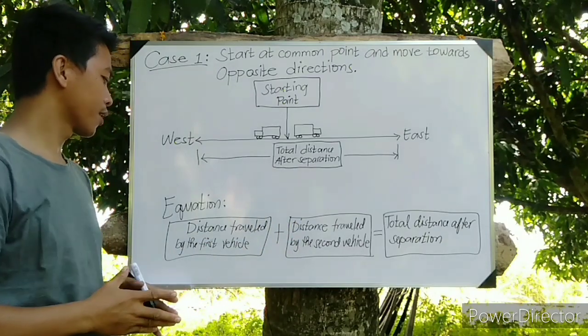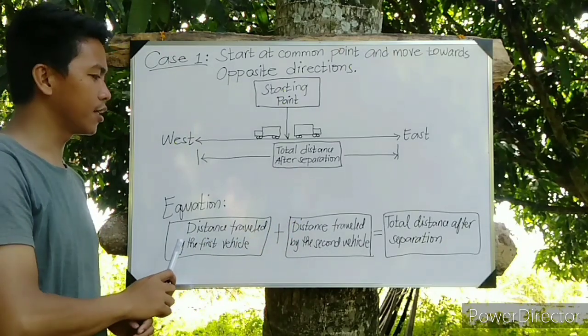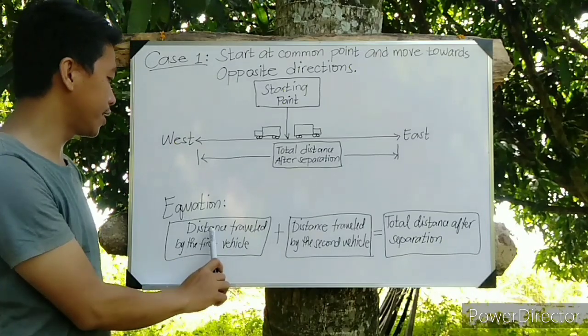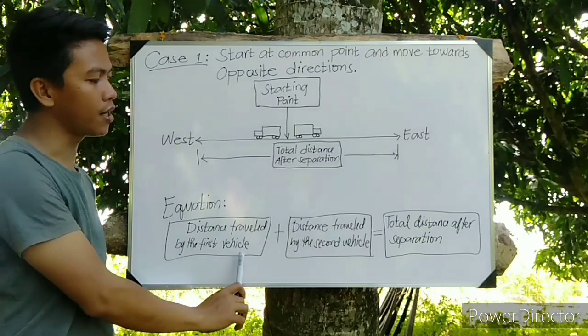In solving this situation we have here the equation to follow: the sum of the distance traveled by the first car and distance traveled by the second car equals the total distance after separation.